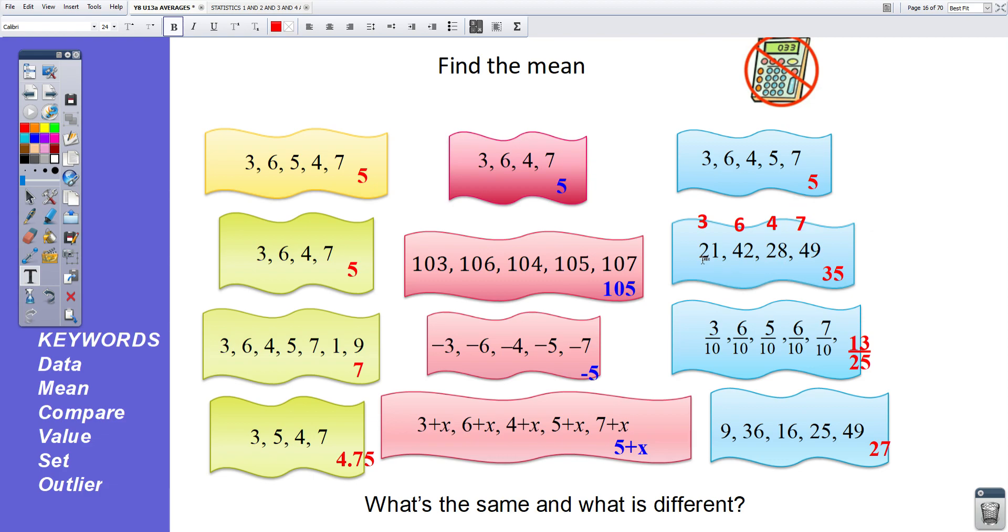3, 6, 4, and 7. 3, 6, 4, and 7. The mean of 3, 6, 4, and 7 is 5. So, our answer is going to be 5 times 7, which is 35. 3, 4, 5, 6, and 7.